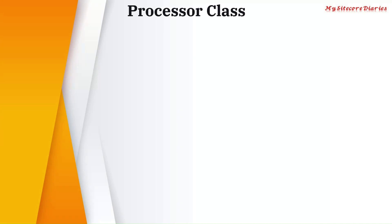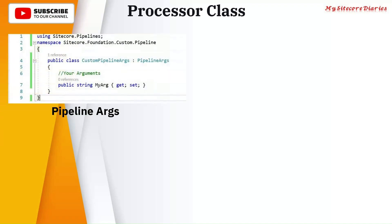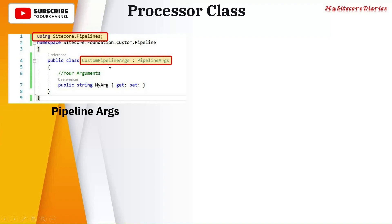Let's look at an example of a custom processor class. First, you will need to define the pipeline arguments. You write a class where you can define your custom pipeline arguments, and it will inherit the PipelineArguments class. You also have to add the namespace or a reference of Sitecore pipeline. The custom pipeline argument is your own custom argument which inherits PipelineArguments.